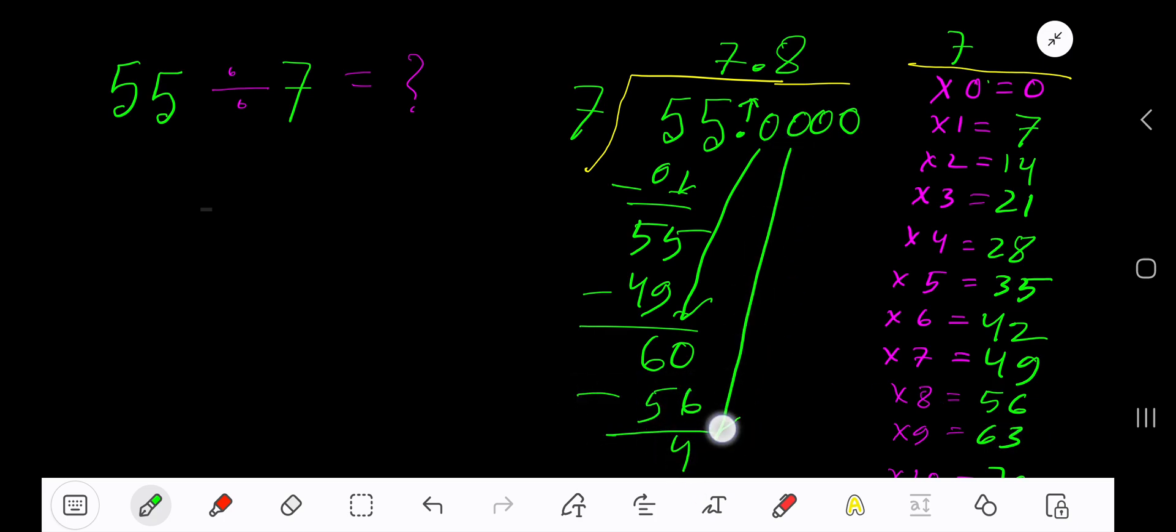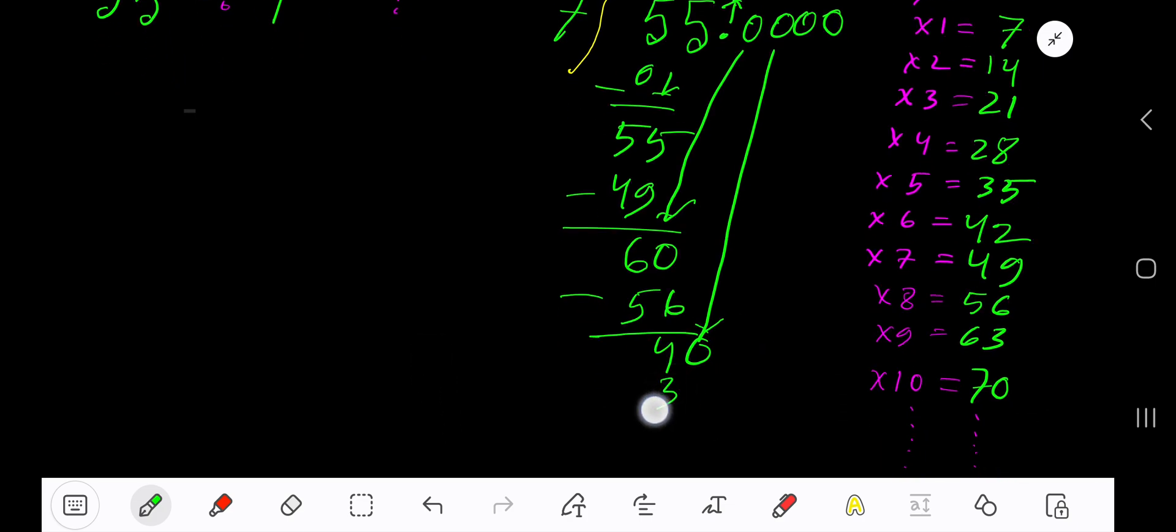You get 4. Bring down the next 0. 7 goes into 40 how many times? 5 times. 5 times 7 gives you 35, subtract to get 5. Bring down the next 0. 7 goes into 50 how many times? 7 times. 7 times 7 is 49, subtract.